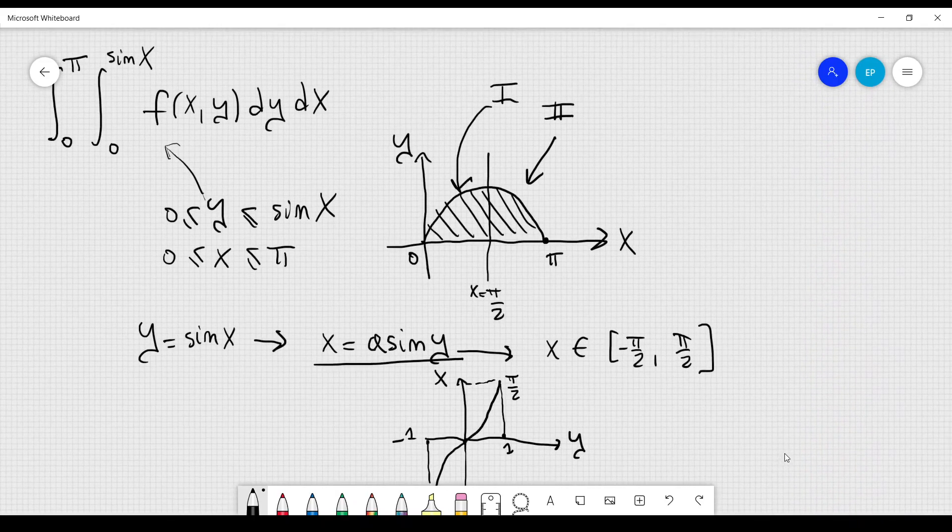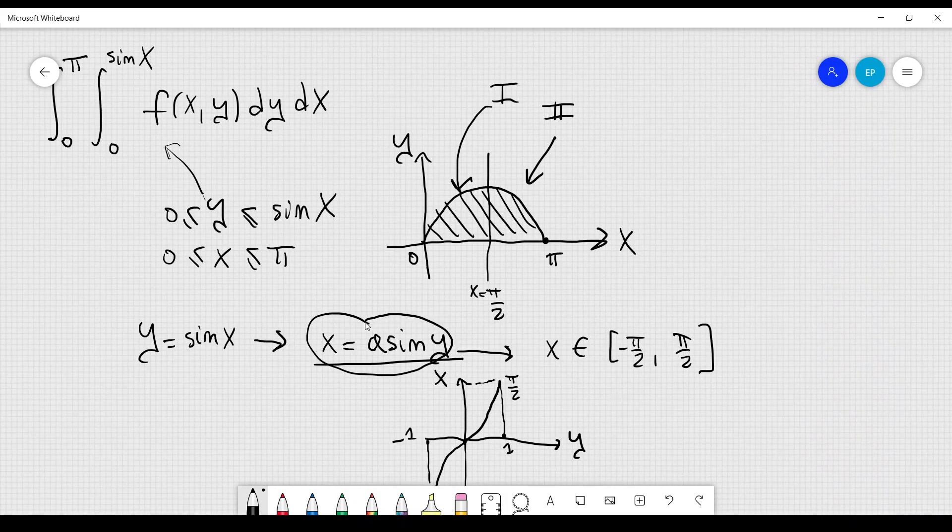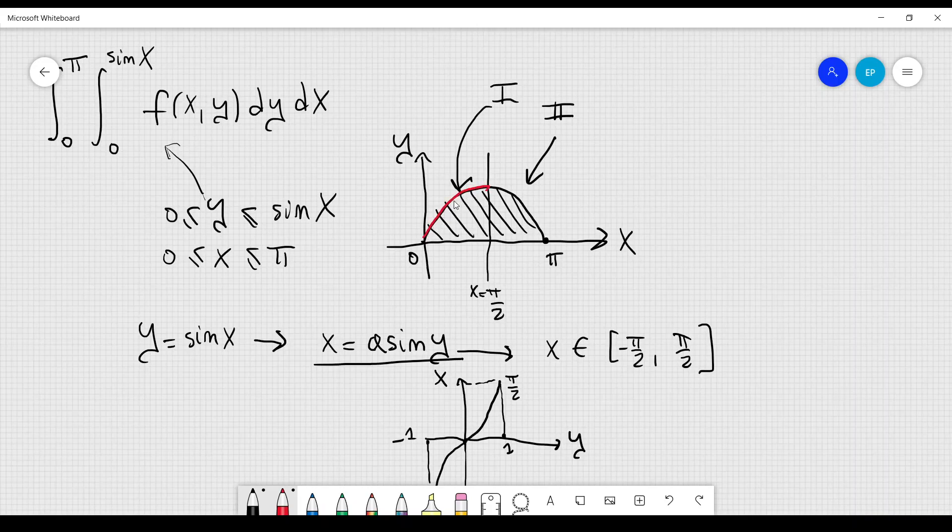This portion here, when x is between 0 and π over 2, describes this curve right here. But it does not describe this one, because as I just told you, this function can describe only the portion where x is between minus π over 2 and π over 2. So it describes also this portion here, but we are not interested in this one, because this is true for negative x's, and I'm not interested in those values.